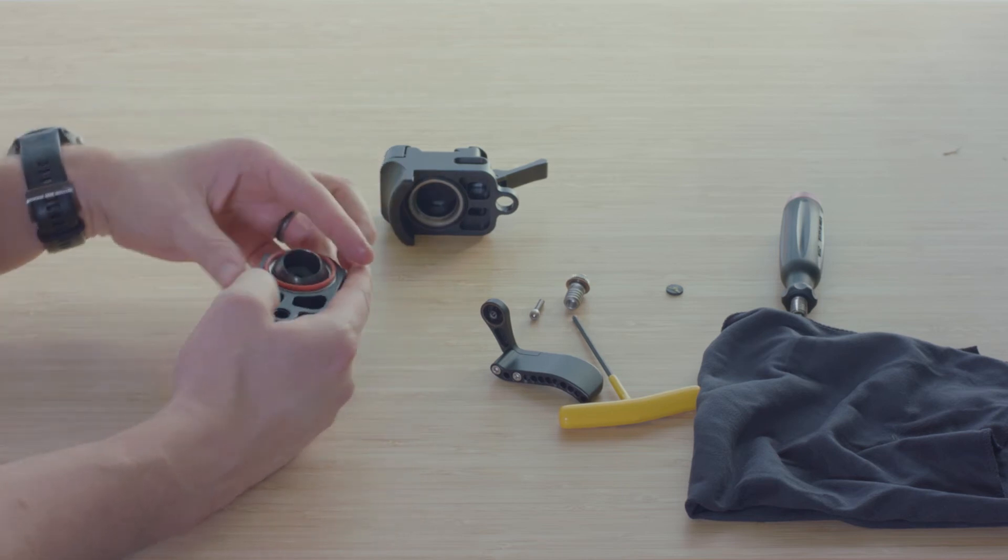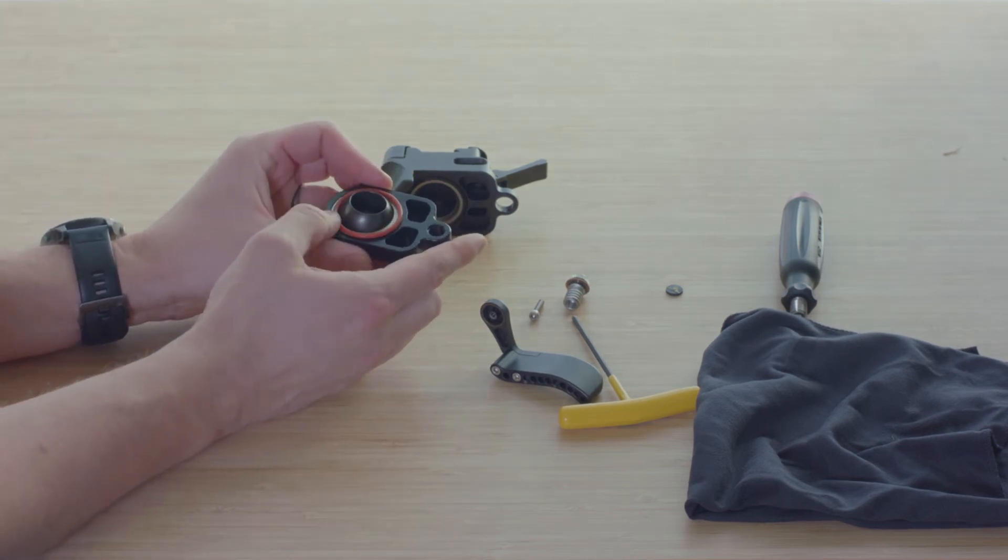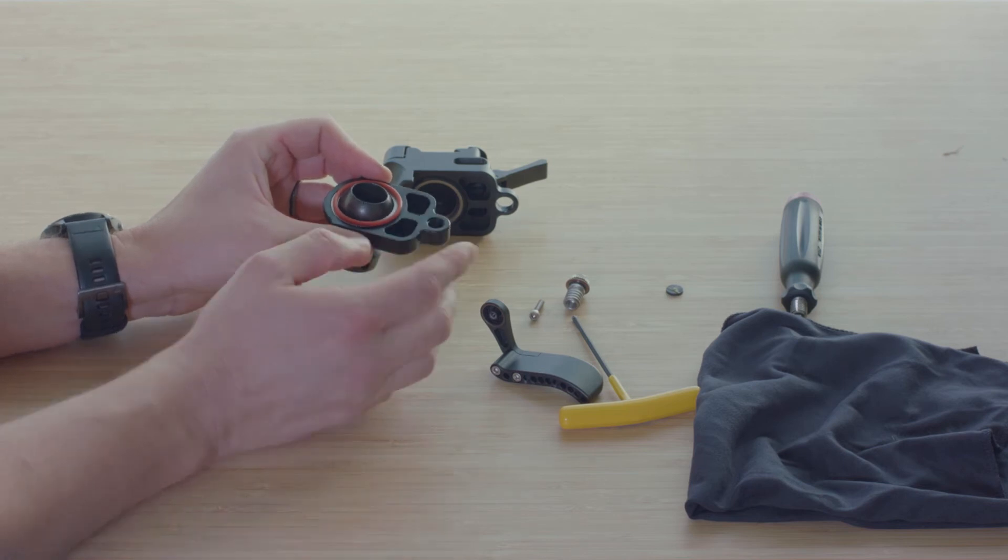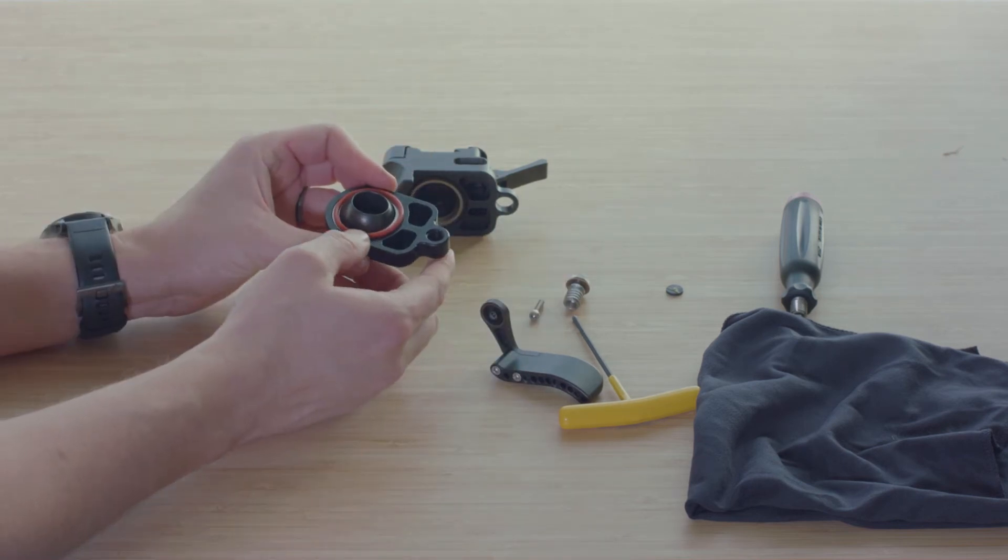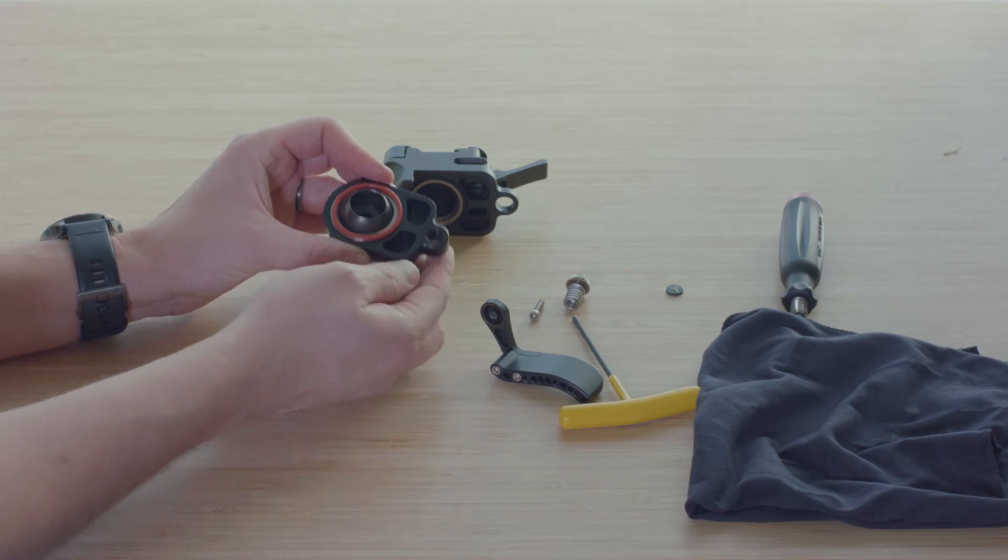Put the o-ring slightly offset towards the opening here. When you pinch it shut, it's going to pull it over, so just make sure it's level up and down and a little bit offset.